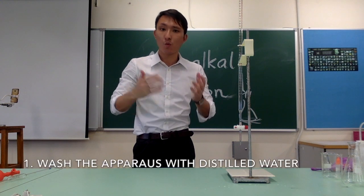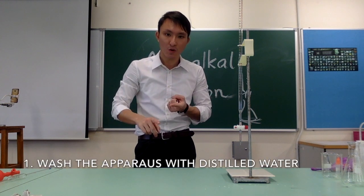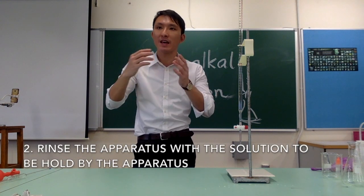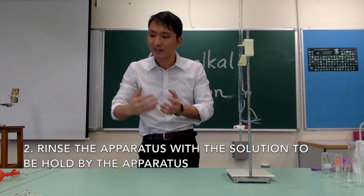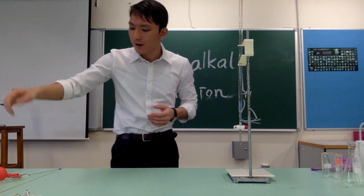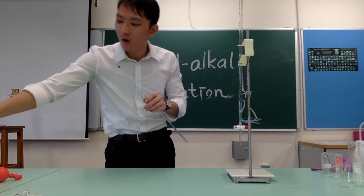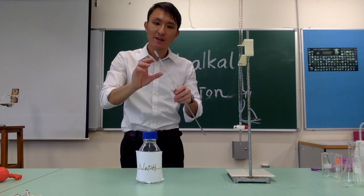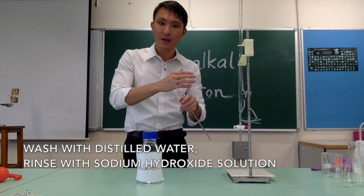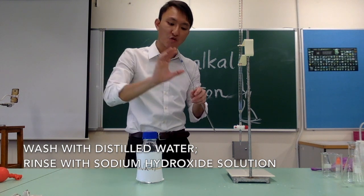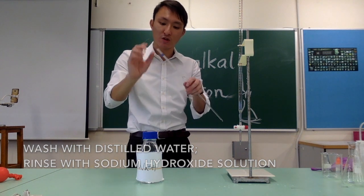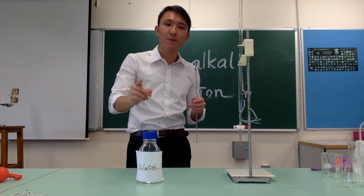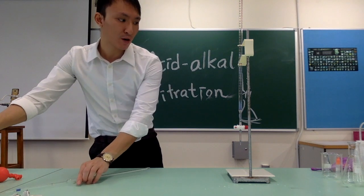The general rule of thumb for cleaning is to wash all the apparatus using distilled water, and then rinse the apparatus with the solution that is going to be held or transferred by that apparatus. For example, a pipette — we are going to measure out 25 cm³ of our unknown sodium hydroxide. So to clean it, first use distilled water to wash it, and then rinse it with sodium hydroxide, because we are going to use the pipette to transfer sodium hydroxide.